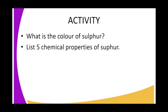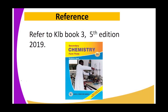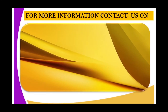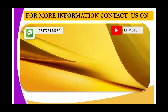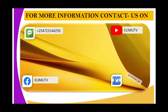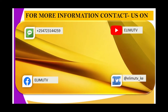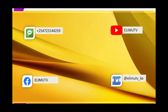Activity: What is the color of sulfur? List five chemical properties of sulfur. References: KLB Book 3, Fifth Edition, 2019. For more information contact us on YouTube, Facebook, and Twitter at Elimu TV. Thank you for watching Elimu TV — stay tuned.